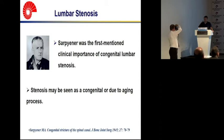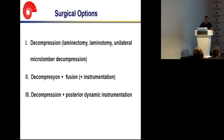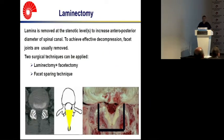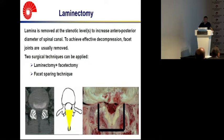Lumbar stenosis may be seen congenitally or it might develop due to the aging process. In the surgical treatment of lumbar stenosis, we have different treatment methods. The first two were already presented by the lecturers. The routine procedure is to remove the lamina at the stenotic level or levels to increase the anterior-posterior diameter of the spinal canal. However, to achieve effective decompression, the facet joints are also usually removed. The two traditional surgical techniques are laminectomy with facetectomy and the facet-sparing technique.